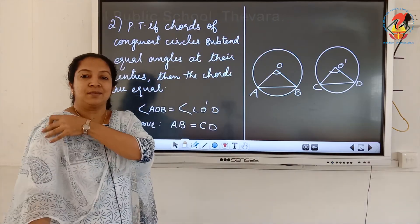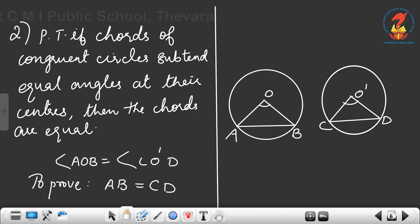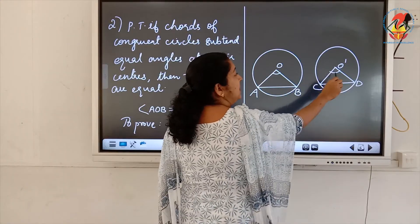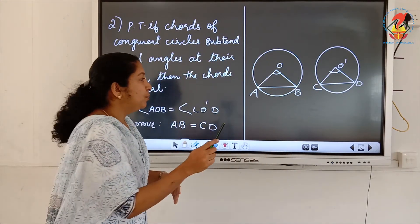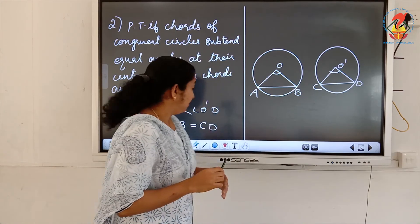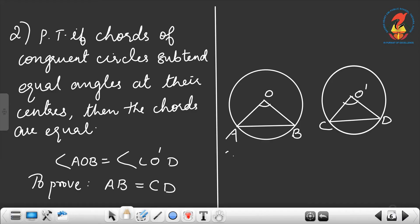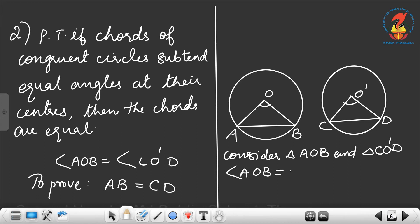Question 2: Prove that if chords of congruent circles subtend equal angles at their centers, then the chords are equal — the converse. What is given: angle AOB equals angle CO dash D. What we have to prove: AB equals CD.